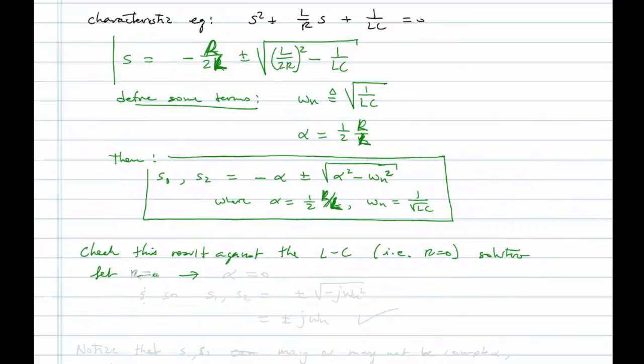So we let R equal zero. This leads to alpha being zero. And so S1 and S2 become plus or minus square root of minus omega n squared, or plus or minus j omega n. And this checks with what we found previously.